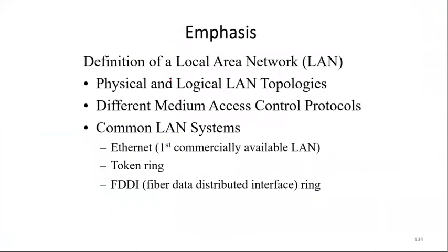So we have seen the local area network definition: it is for shorter distances, basically in a building or a campus, and LANs are connected to WANs. After that, we have physical and logical LAN topologies such as ring topology, star topology, etc. Then we have medium access control MAC protocols. The common LAN systems are Ethernet, token ring, and Fiber Distributed Data Interface FDDI ring.